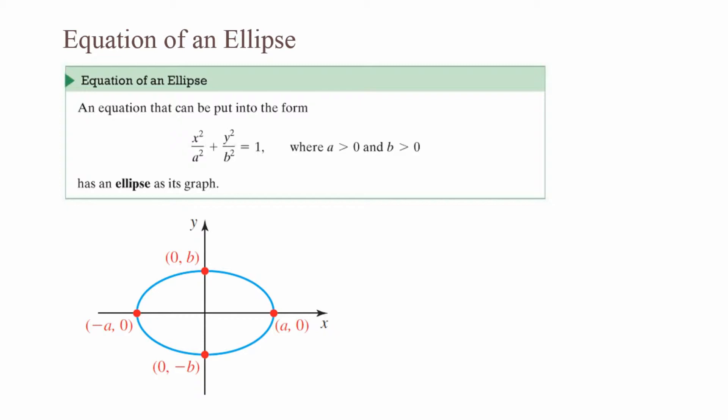Equation of an ellipse: an equation that can be put into the form x² / a² + y² / b² = 1, where a > 0 and b > 0, has an ellipse as its graph. An ellipse has four intercepts at the ordered pairs (a, 0), (−a, 0), (0, b), and (0, −b).